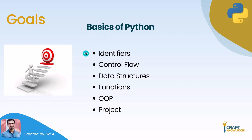We'll start by talking about identifiers, variables, data structures, and control flow — how we can make decisions in a programming language. We'll cover the data structures offered by Python, which are really cool. Then we'll talk about functions: user-defined functions and built-in functions. Finally, we'll wrap up by talking about OOP — object-oriented programming — and the OOP paradigm.